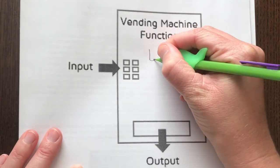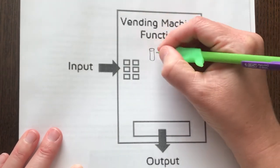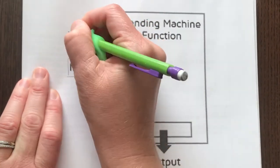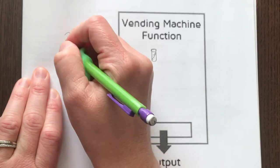So let's say you want to buy a can of Coke. Well, your input, which we call our x value, which is our domain.